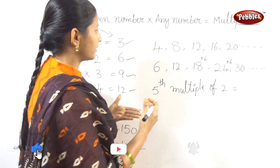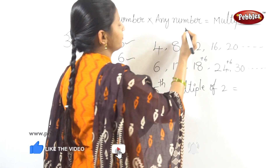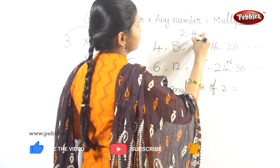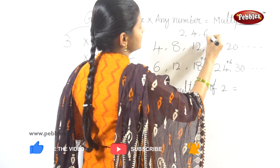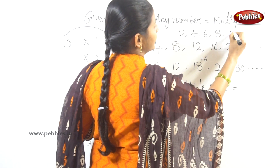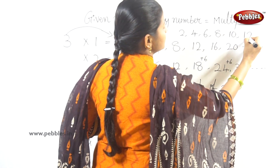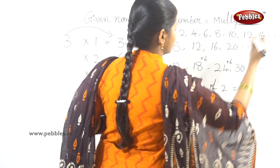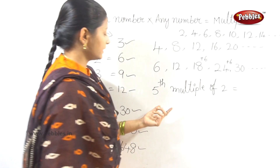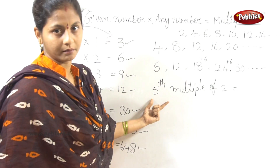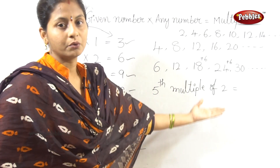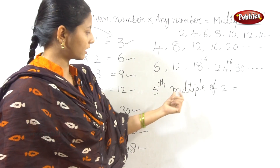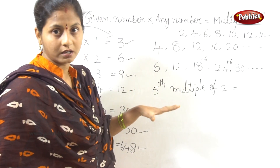To find the 5th multiple of 2, we list the multiples: 2 ones are 2, 2 twos are 4, 2 threes are 6, 2 fours are 8, 2 fives are 10, 2 sixes are 12, 2 sevens are 14. The 5th multiple of 2 is 10.